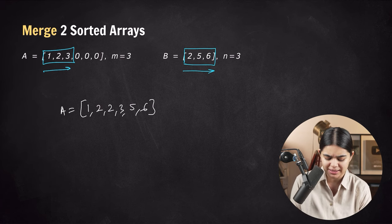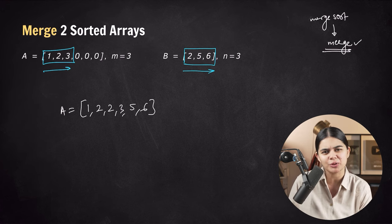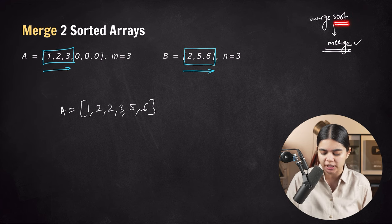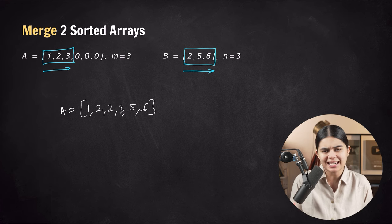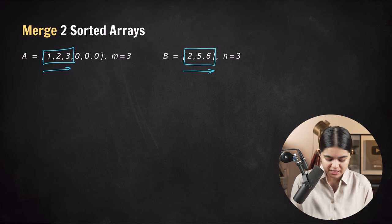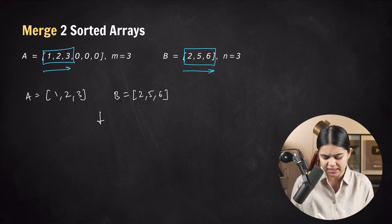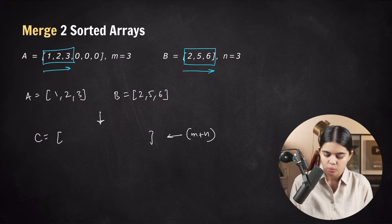The approach is similar to the merge step in merge sort, which we will study during recursion. It is a very efficient sorting algorithm working in O(n log n). The easy approach: suppose we have array A as 1, 2, 3 and array B as 2, 5, 6. We simply take a third array C of size m plus n so that both arrays' elements fit.